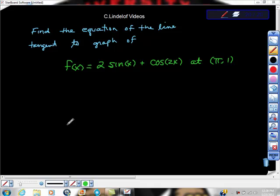So we're asked to find the equation of the line tangent to the graph of f(x) equals 2 sine x plus cosine 2x at the point π, 1. It seems like a lot, but this is really a very straightforward problem. Let's try to work through this quickly.